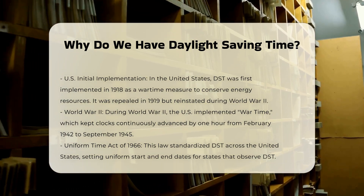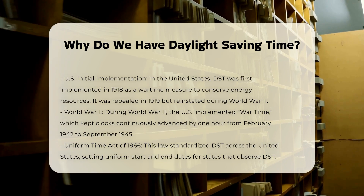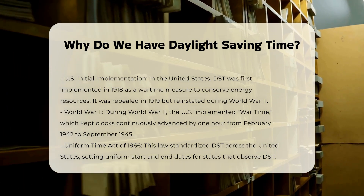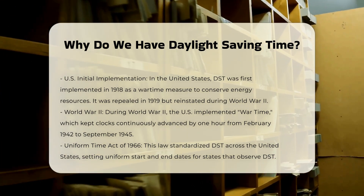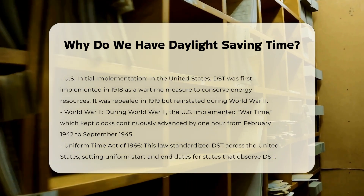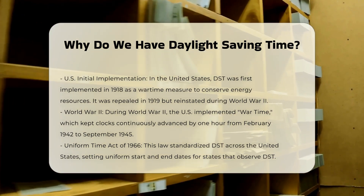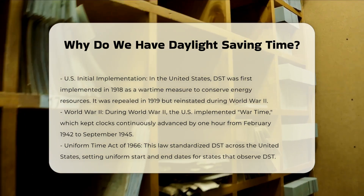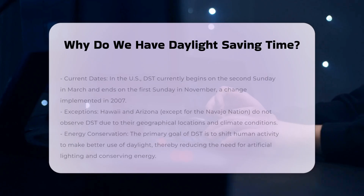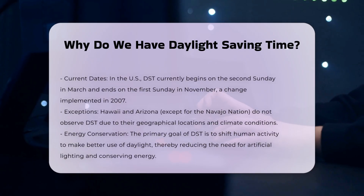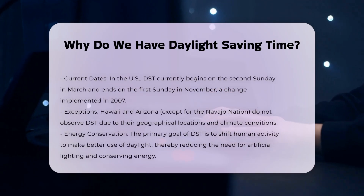During World War II, some countries kept their clocks continuously advanced by an hour to further conserve energy. In the United States, this wartime measure was implemented from February 1942 to September 1945.